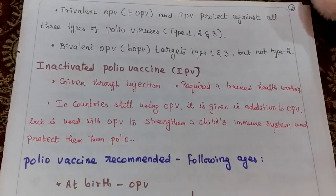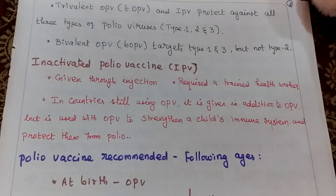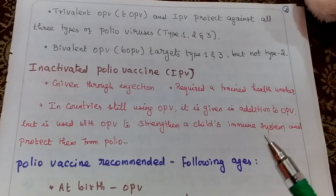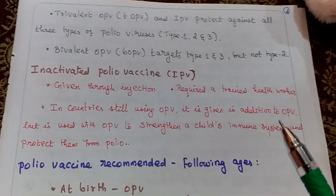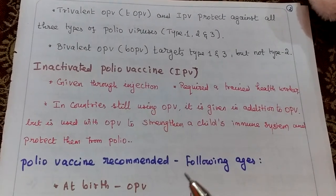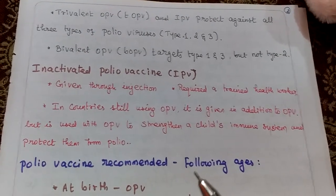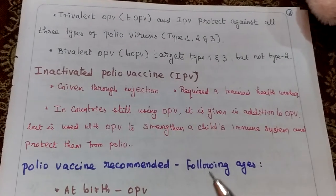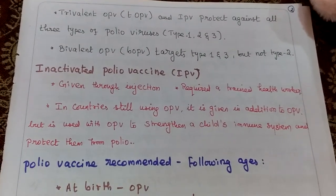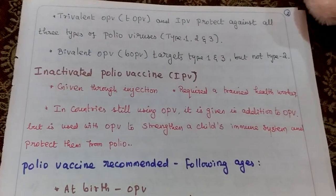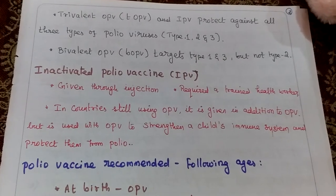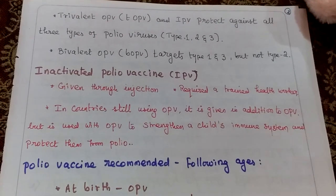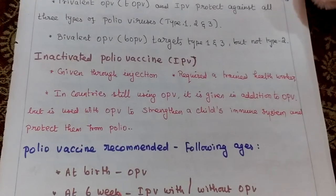The second vaccine is inactivated polio vaccine, given through injection, and requires a trained health worker. In many countries, oral polio vaccine is still used, and IPV is given in addition to OPV to strengthen a child's immune system and protect from polio.